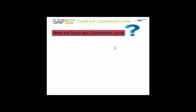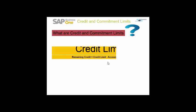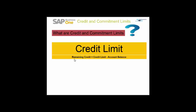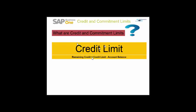To calculate a customer's remaining credit limit, the formula used is: Remaining Credit = Credit Limit minus Account Balance. In other words, the credit limit will be your remaining credit plus your account balance.